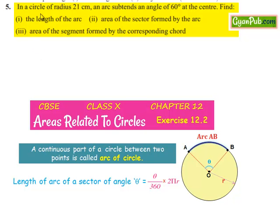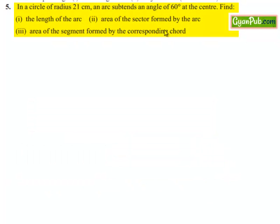Coming to the fifth question: in a circle of radius 21 cm, an arc subtends an angle of 60 degrees at the center. Find the length of the arc, the area of the sector formed by the arc, and the area of the segment formed by the corresponding chord.